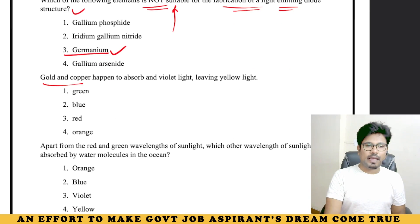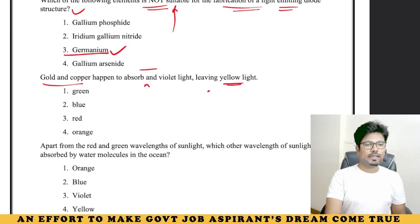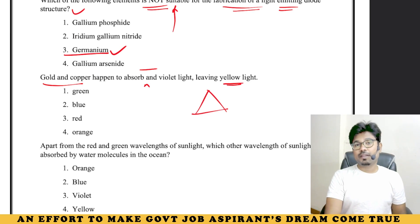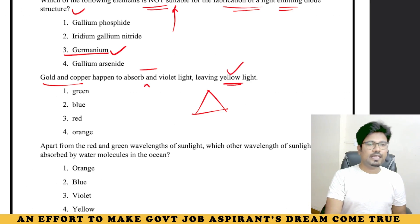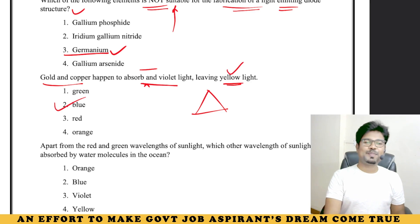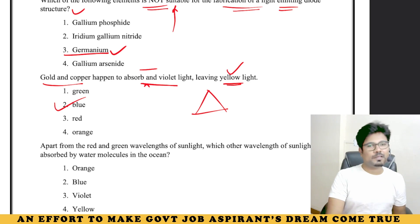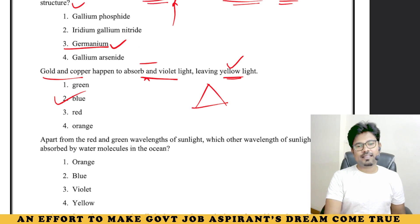Gold and copper happen to absorb violet and blue light, leaving yellow light. This relates to the light concept we discussed in loose-end physics. RGB, yellow, magenta — we discussed all these. When blue and violet are absorbed by gold/copper, yellow is what remains and is released. That's it.